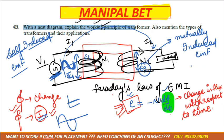The EMF also depends on N, the number of turns. If the number of turns is more, then more EMF will be induced. If the number of turns is less, then less EMF will be induced.